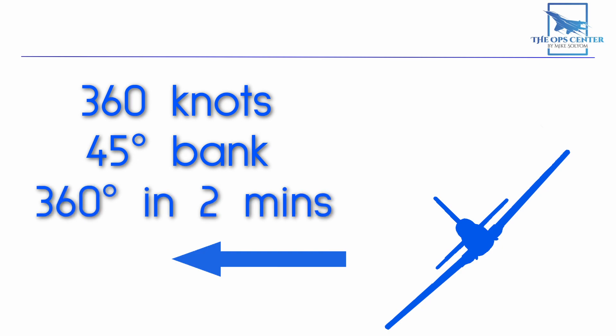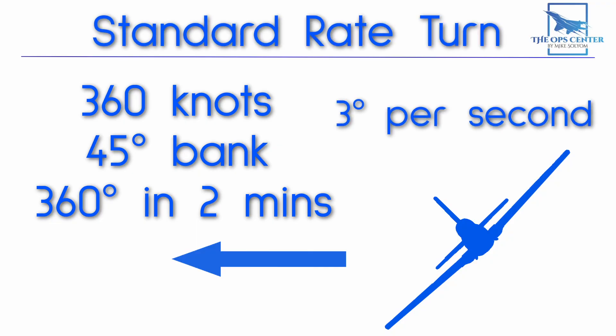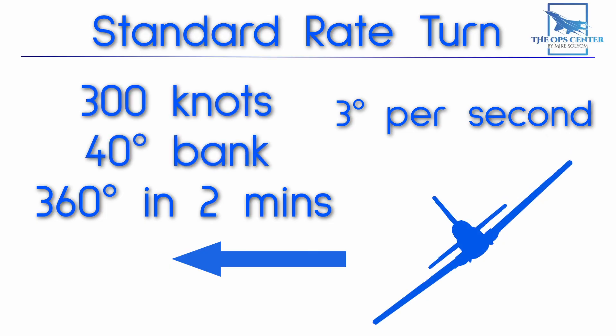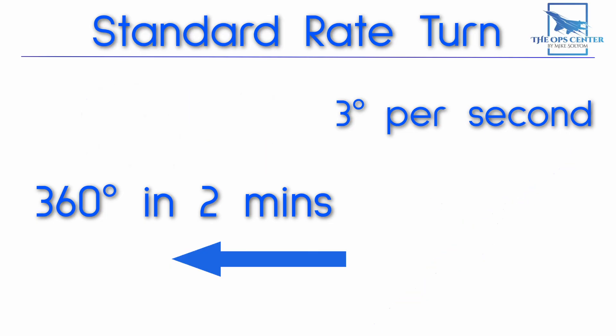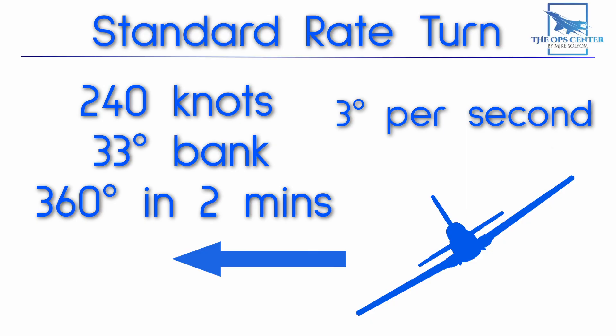This translates to 3 degrees per second, or what is called a standard rate turn among professional pilots. You can get the same turn rate flying 300 knots in a 40 degree bank, or 240 knots in a 33 degree bank. No matter which one you choose, you'll do 3 degrees of turn per second, which lets you plan how long a turn will take. This is why the standard rate turn is used by real world pilots, and you can use it too in DCS.